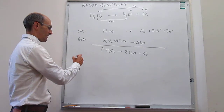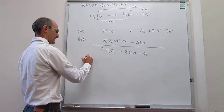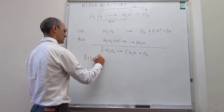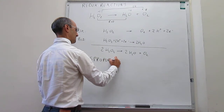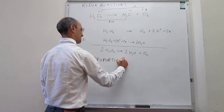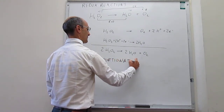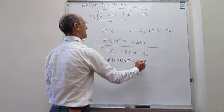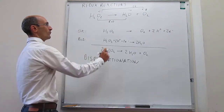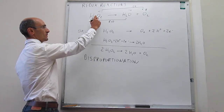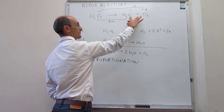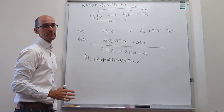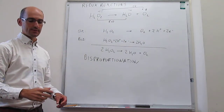This is an example of a reaction we call disproportionation. The key is that you have one element in reagents in a single compound, and that generates two different products in which that element is in two different oxidation states.